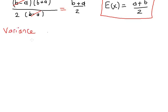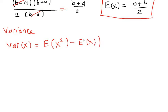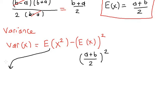Now let's find the variance. By definition, the variance of x is the expectation of x squared minus the expectation squared. We already found the expectation, which is a plus b over two, so the expectation squared is a plus b over two, all squared. We now need to find the expectation of x squared.